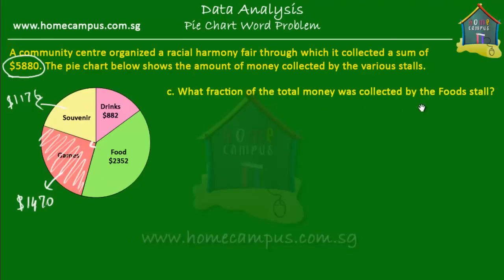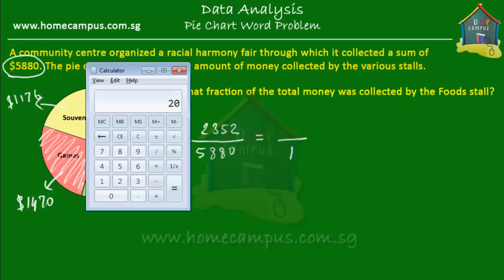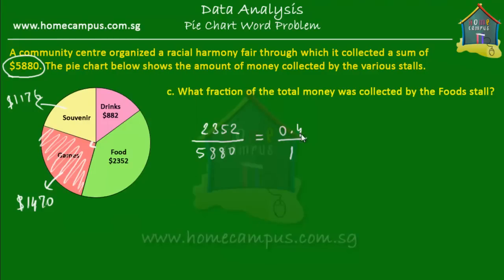What fraction of the total money was collected by the food stall? The food stall collected $2,352 over the total collection of $5,880. We simplify: 2,352 divided by 5,880 equals 0.4, giving us 0.4 over 1. Since we don't want a decimal fraction, we multiply both numerator and denominator by 10 — moving the decimal point one place to the right — giving us 4 over 10.